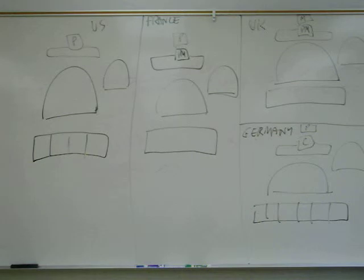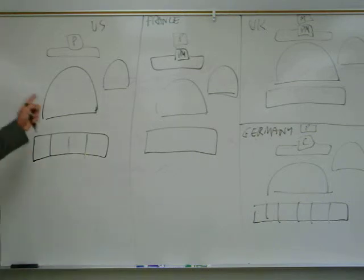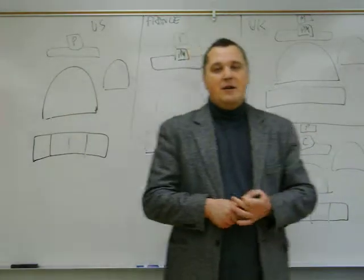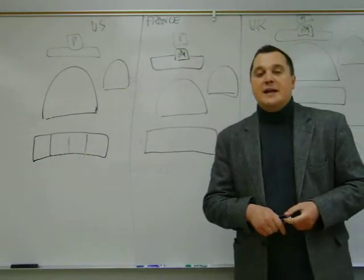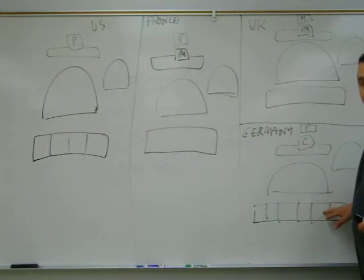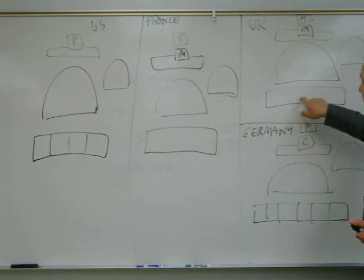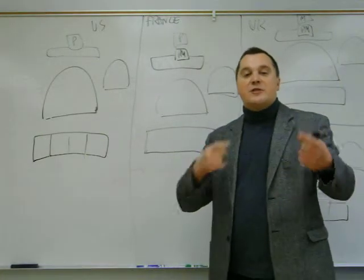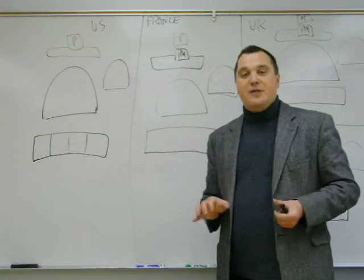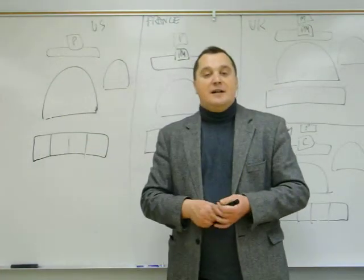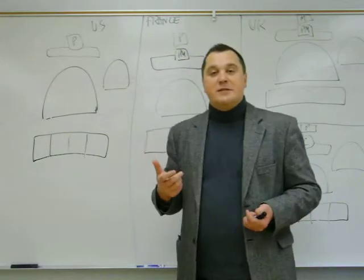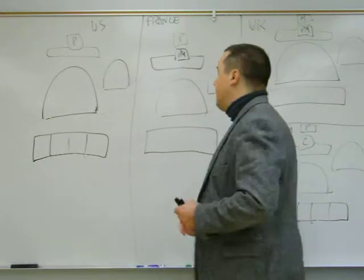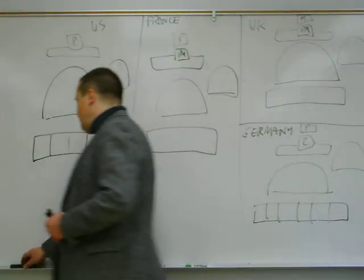These are the three models: presidential, parliamentary, and semi-presidential. Notice that the state organization and the political system are two different things. The state is how sovereignty is distributed; the political system is how institutions are arranged. For example, you can have a federal state with a parliamentary system, or a unitary state with a presidential system — state and political system are distinct.